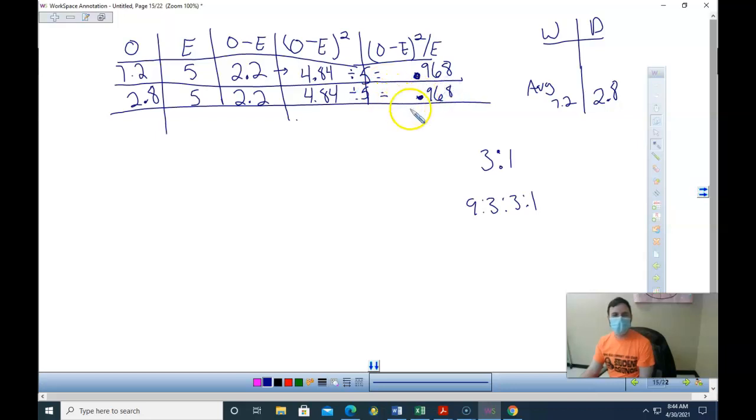And for my chi-squared value, or my actual chi-squared value, I add these up now. 1.936. That's actually pretty low. So that's my chi-squared value.